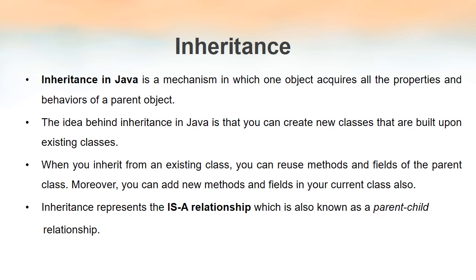Inheritance represents an 'IS-A' relationship between the parent class and child class, and we often refer to it as a parent-child relationship. For example, a car IS-A vehicle — so vehicle is the parent class and car is the child class. Another example: orange IS-A fruit — so fruit is the parent class and orange is the subclass. That is what we mean by the IS-A relationship.